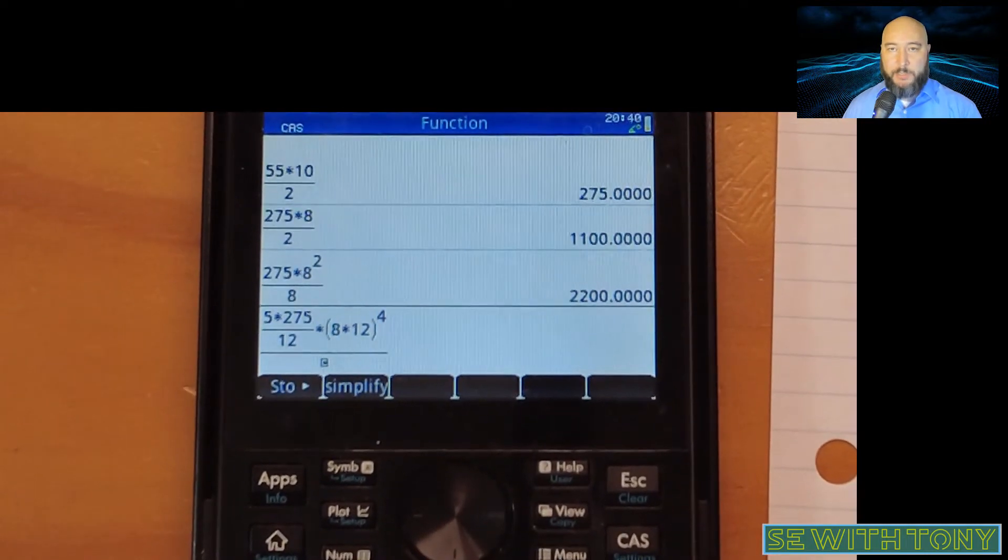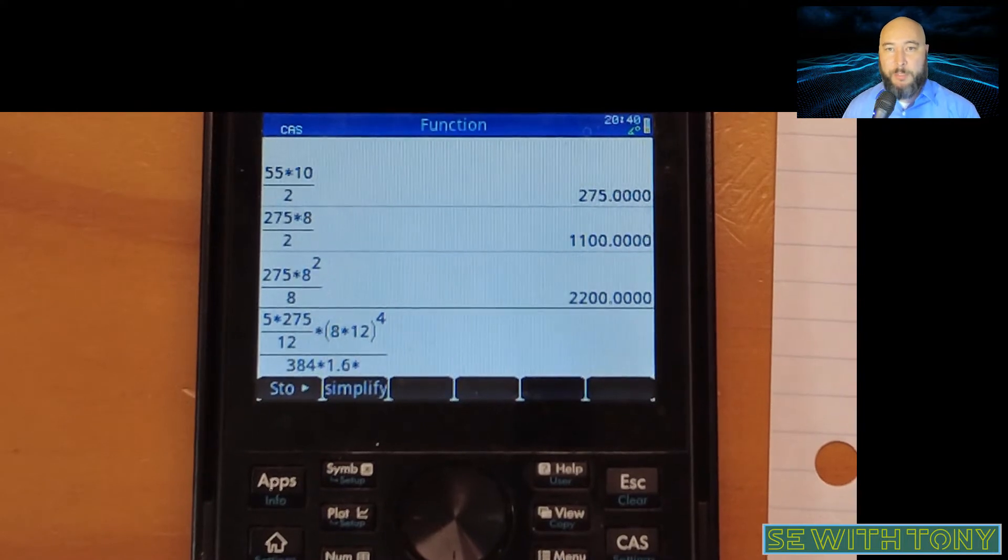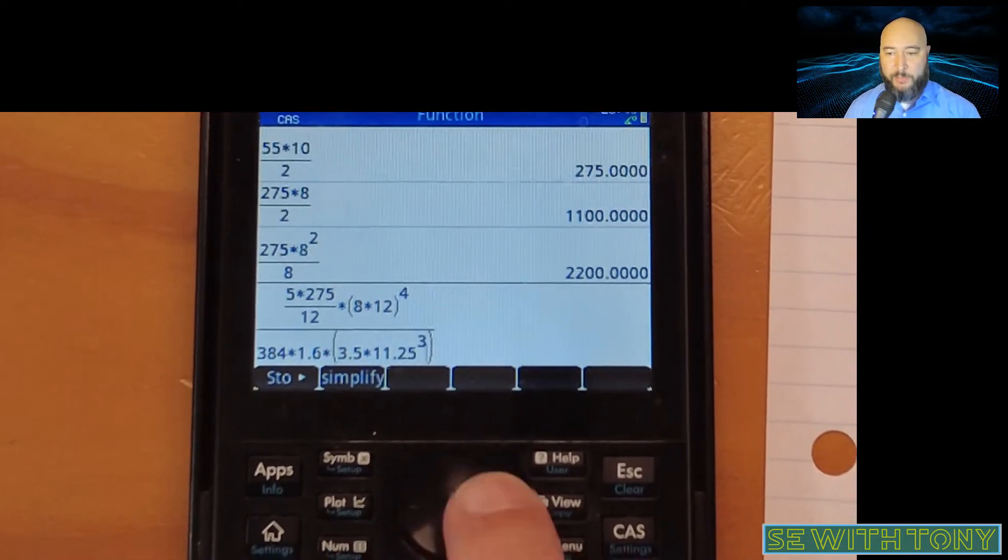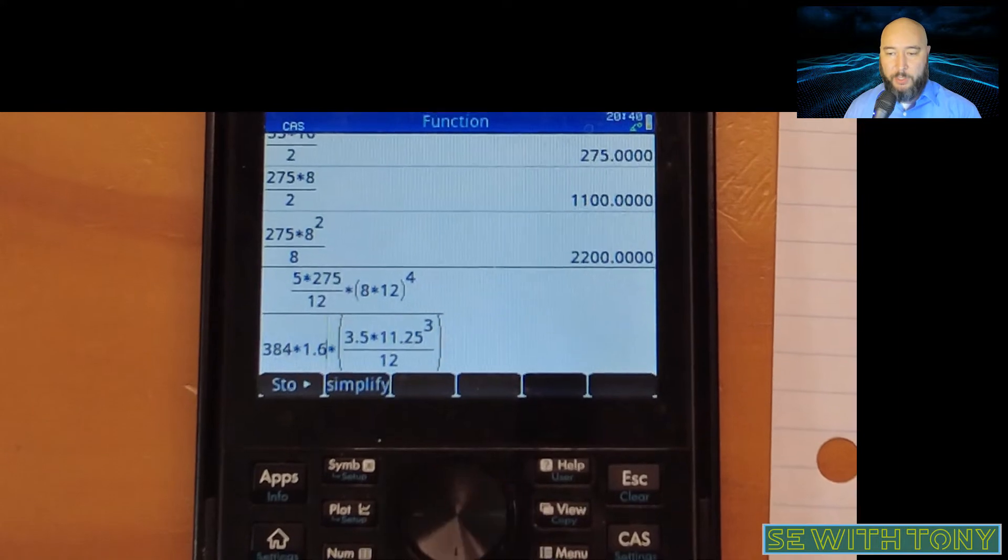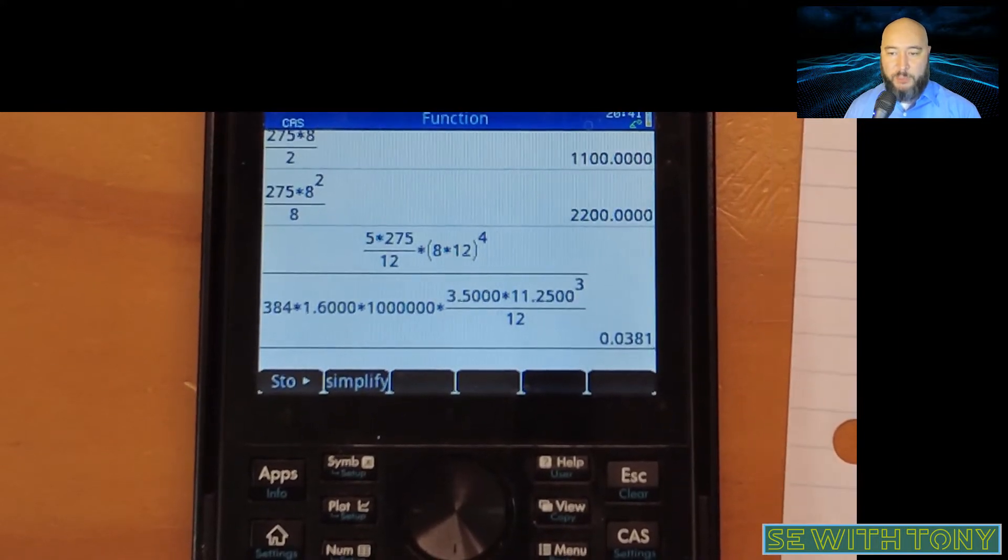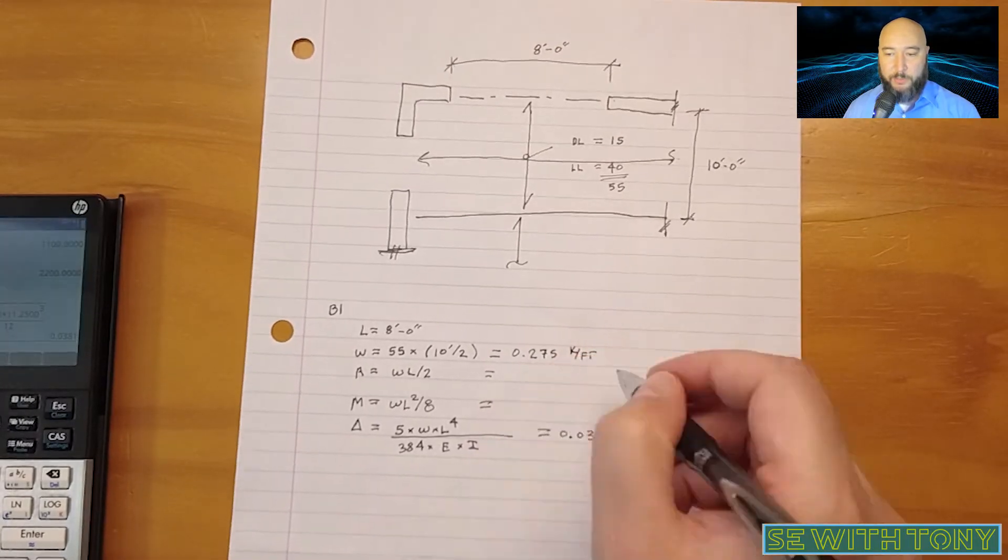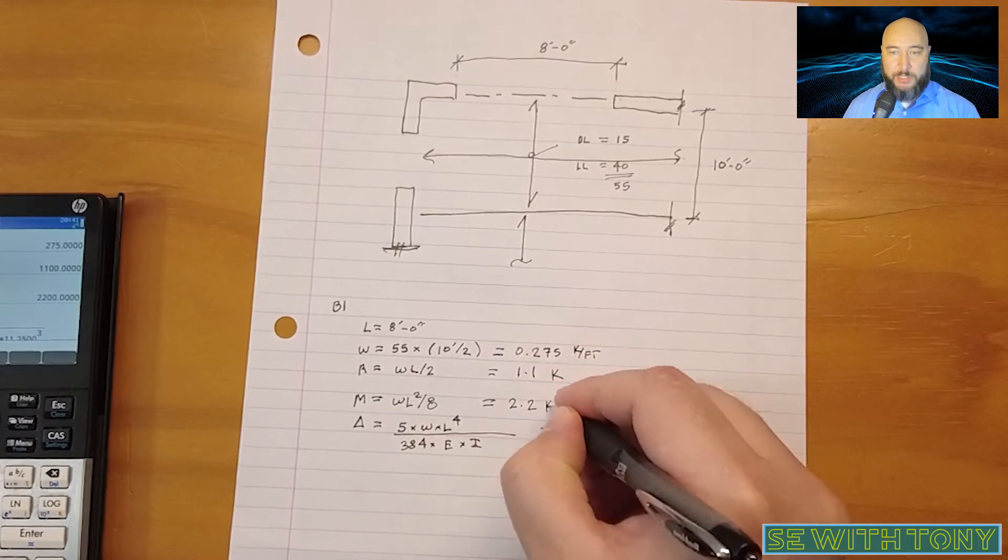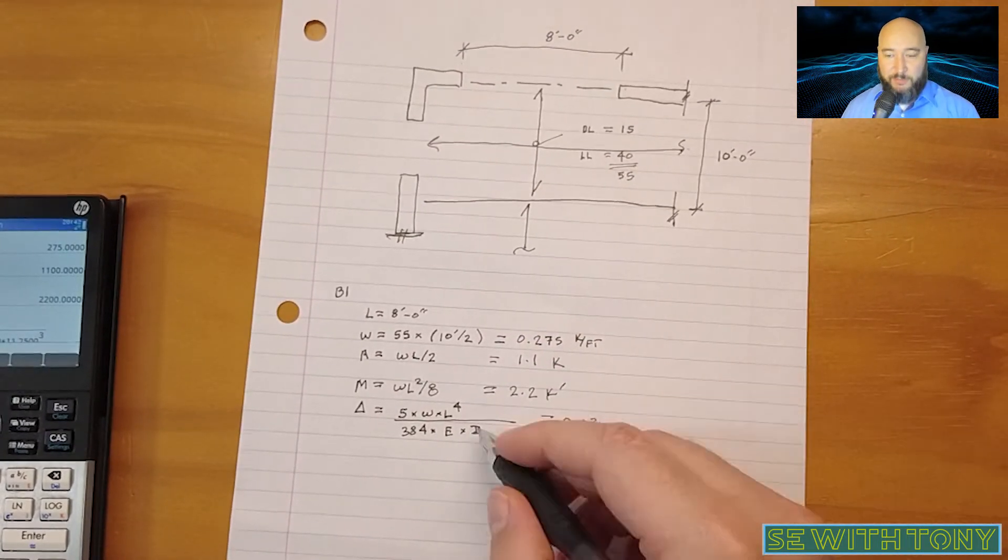From experience, I know that long span beams will be deflection controlled. For an 8 foot header with 275 pounds per foot, I'm going to initially assume a 4 by 12 Doug Fir number 2 material, and the calculation shows it isn't deflecting very much, so it seems like a conservative assumption.